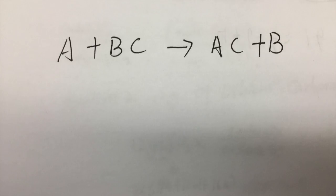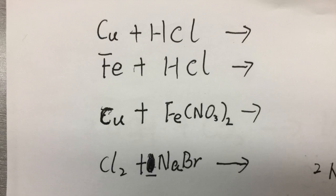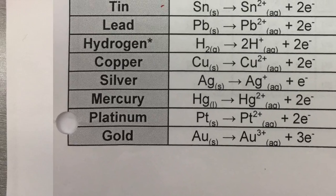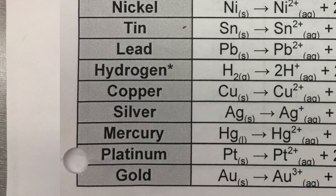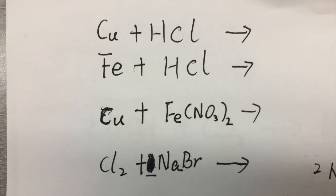Now let's talk about single displacement reactions and how to predict them using the activity series for metals and non-metals. The rule is simple: element A will replace element B only if A has a greater activity than B. For example, comparing copper and hydrogen — hydrogen has a greater activity than copper, so copper cannot replace hydrogen. This reaction will not happen.